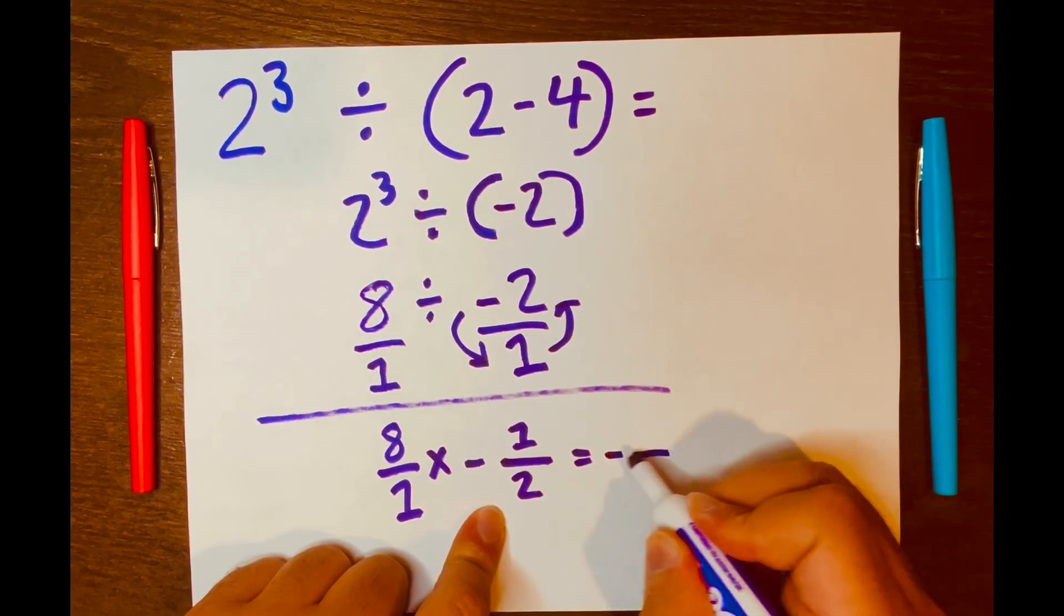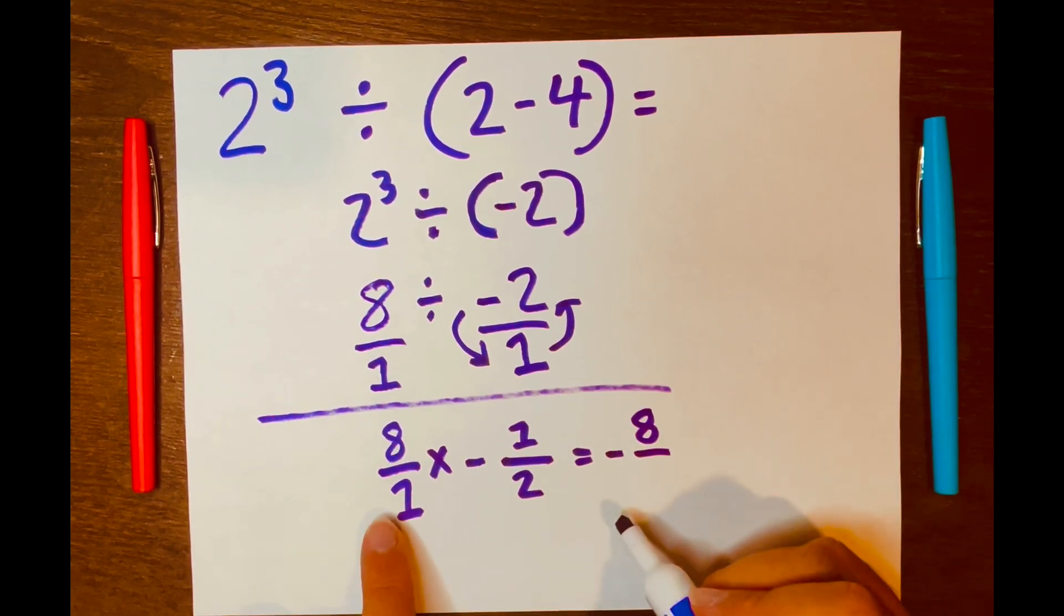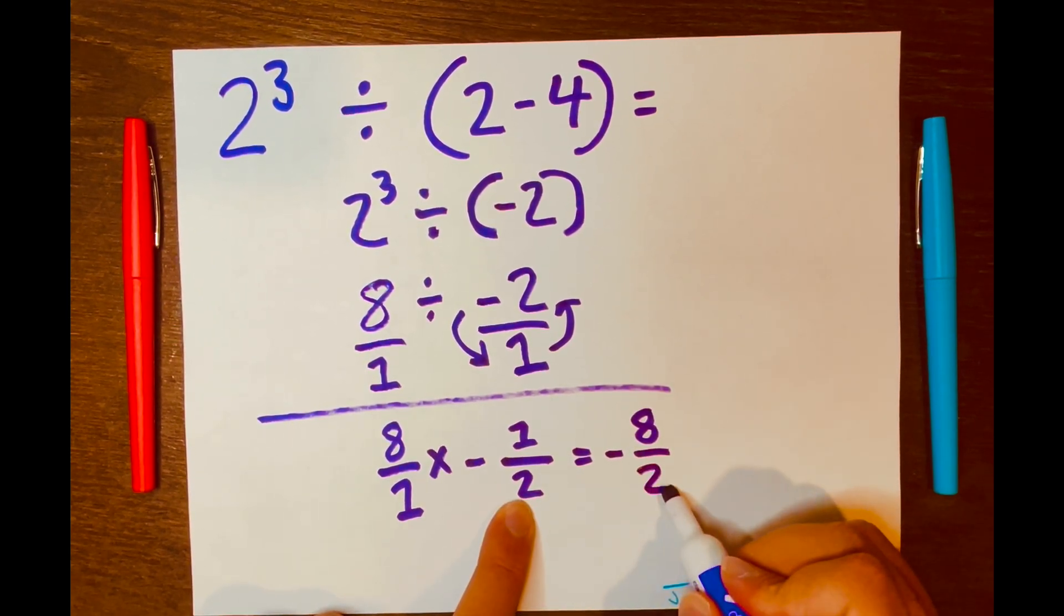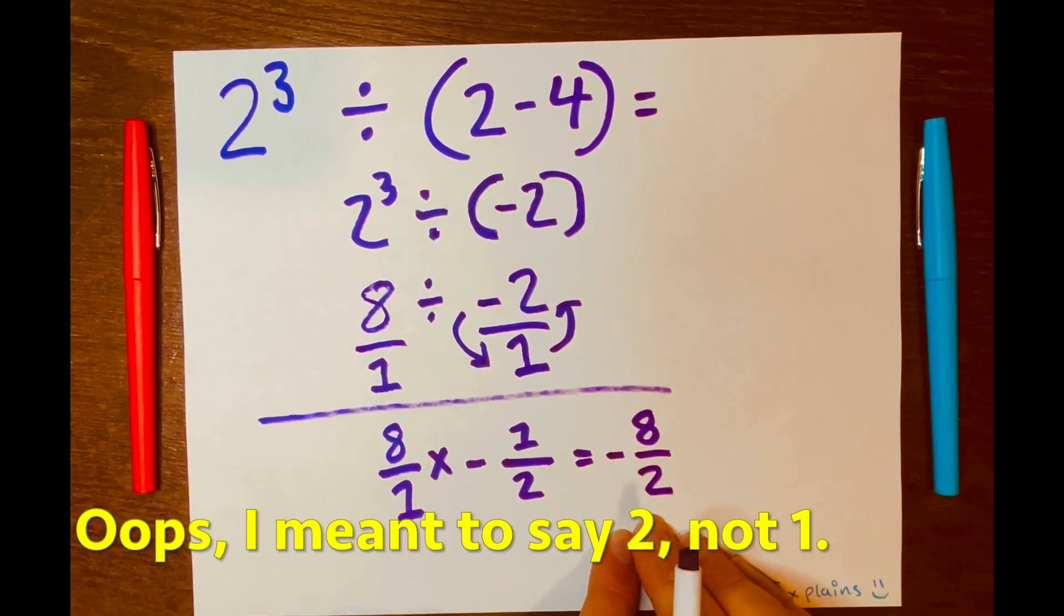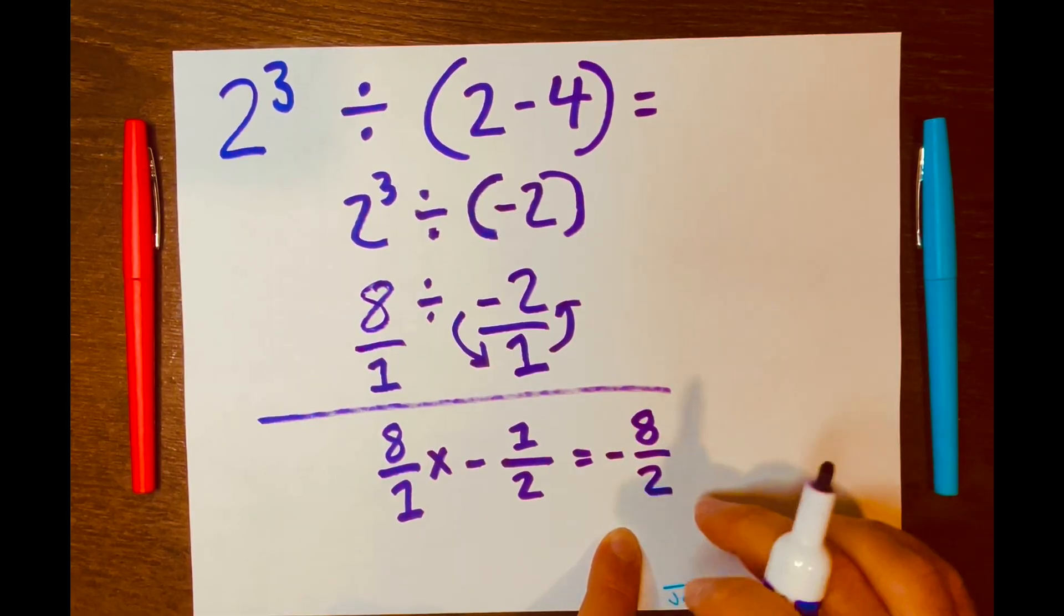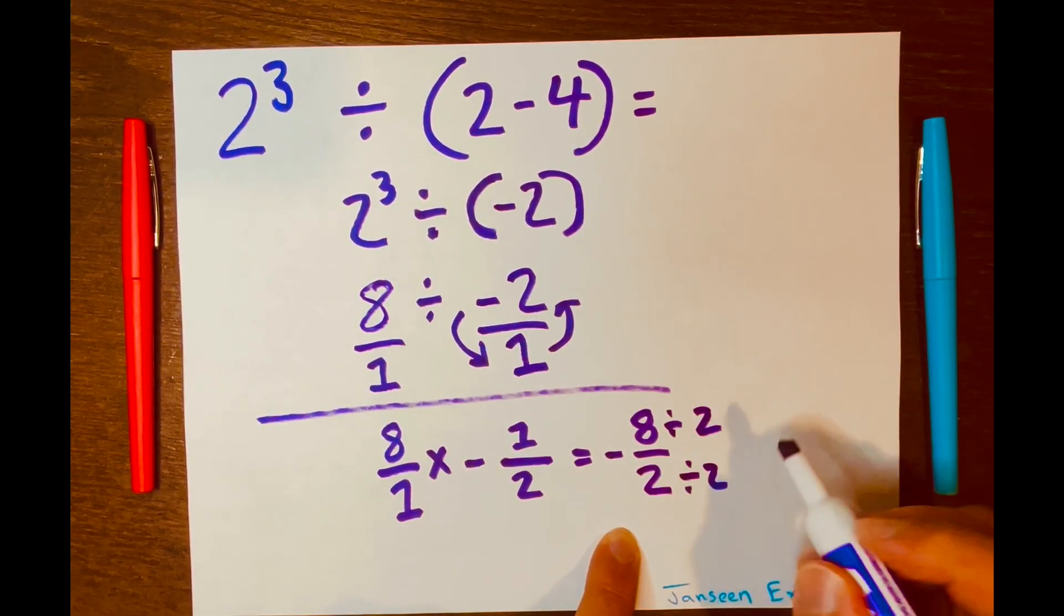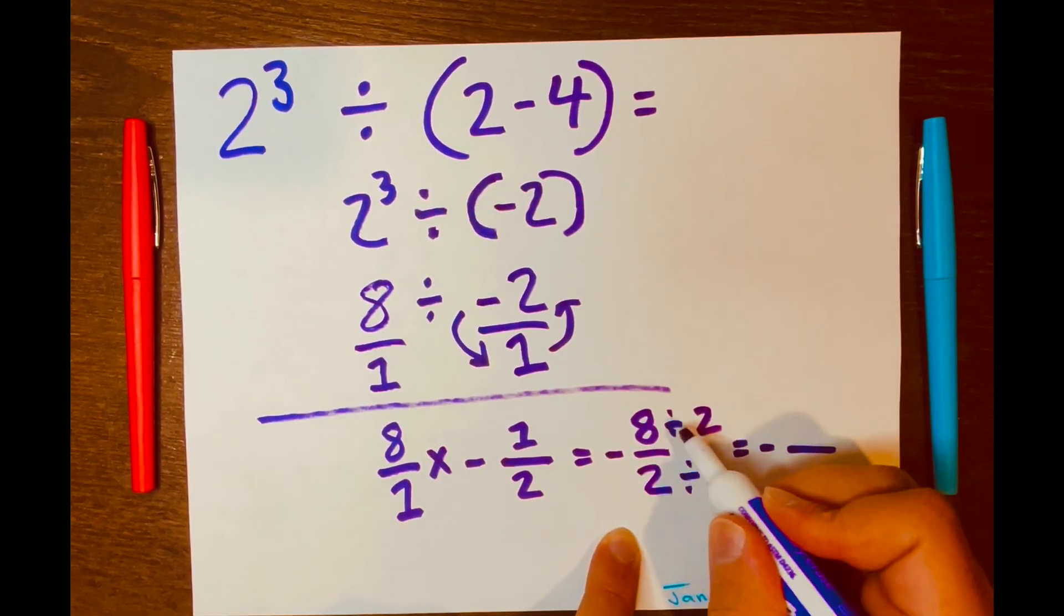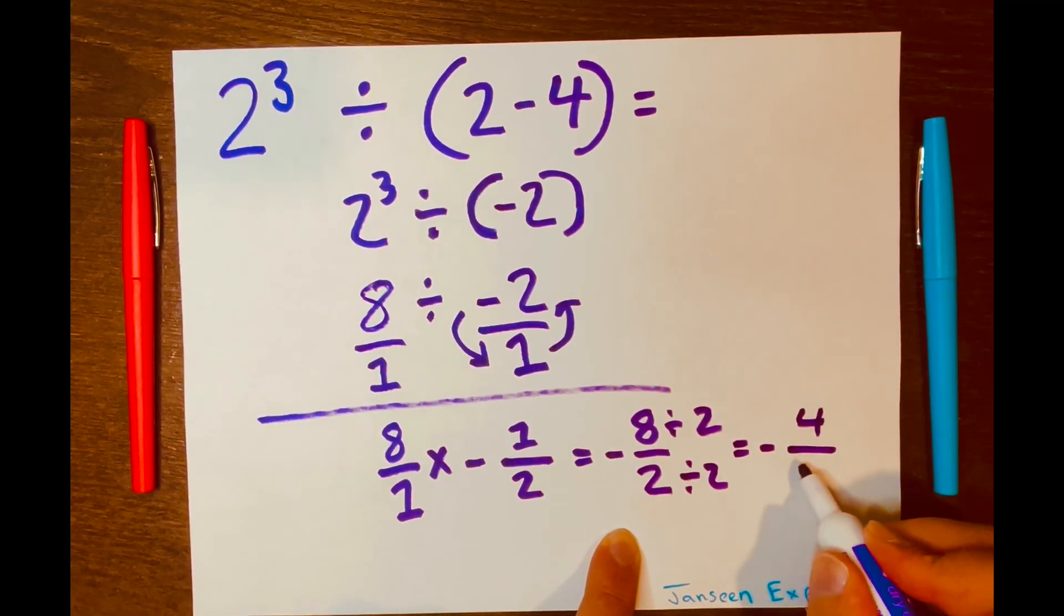So 8 times 1 is negative 8, over 1 times 2 is 2. And now we have negative 8 over 2. Now this needs to be simplified further. So 8 is even, 2 is even. I can just divide by 2. So 8 divided by 2 is 4, and 2 divided by 2 is 1.